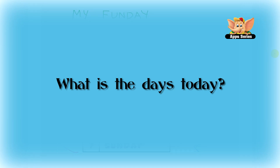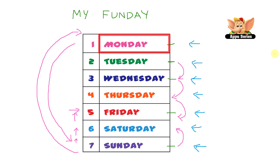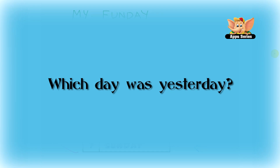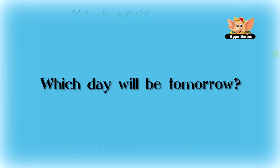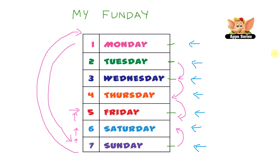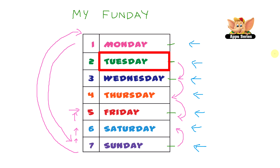What is the day today? Let's say it's Monday. Which day was it yesterday? Yesterday means the day before. So if today is Monday, the day before Monday, as you can see on the chart, is Sunday. Which day will it be tomorrow? Tomorrow is the next day. If today is Monday, tomorrow would be Tuesday.